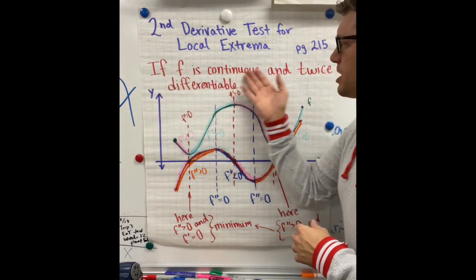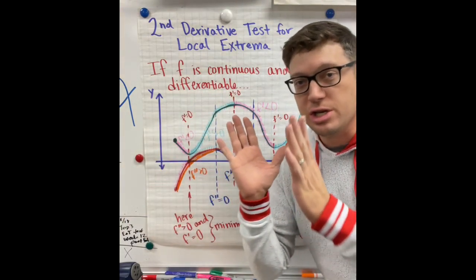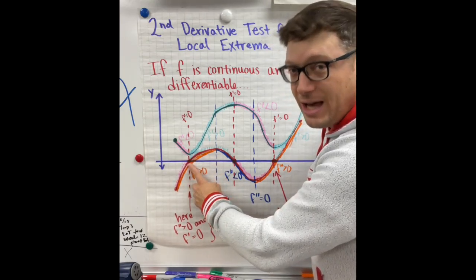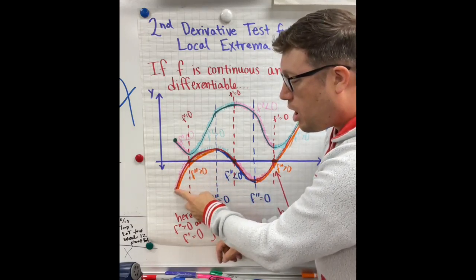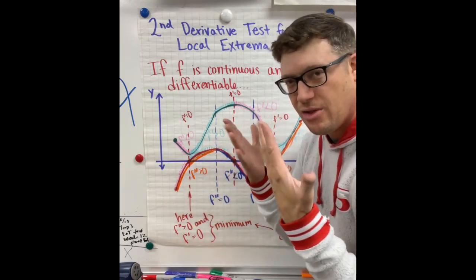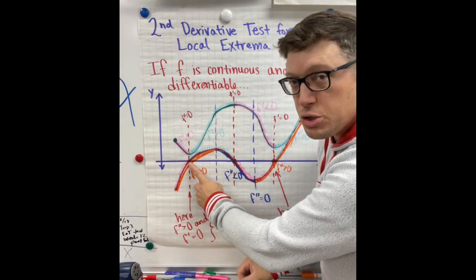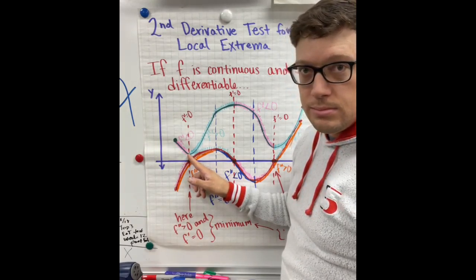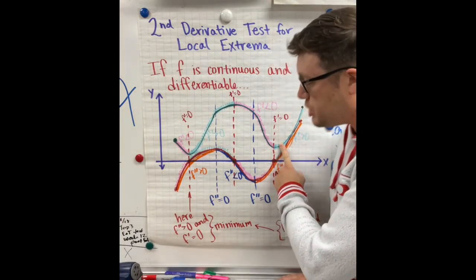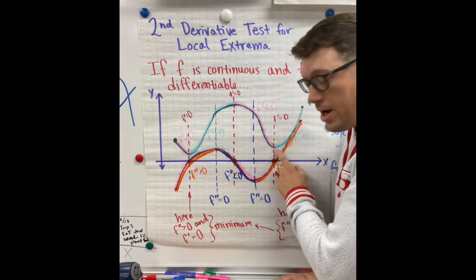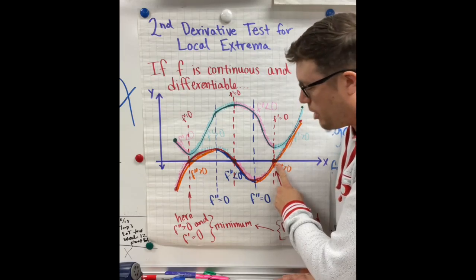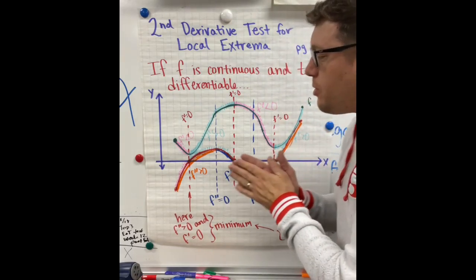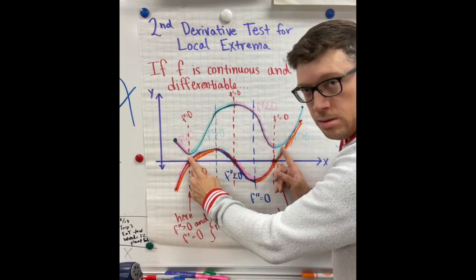If f is continuous and twice differentiable, then we get to go back to the original function and answer this question. Right here is a critical point because the function has a derivative that is zero. And if you look at the orange I've got right here — orange signifying that the second derivative is positive — we can tell that because the first derivative is growing right here. If the first derivative has a positive second derivative, that's a minimum. So over here, same situation: in the original parent function, right here where the function changes direction, it has a first derivative value of zero, but the second derivative is positive — local minimum.